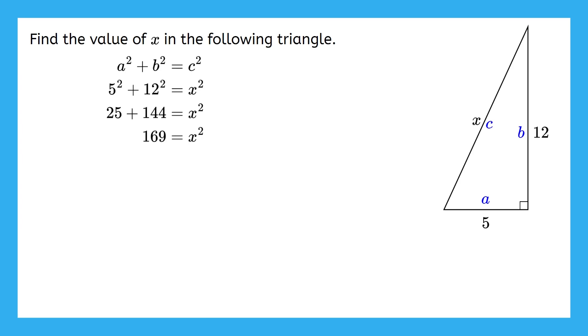Then, for the final step, we have to get x by itself, which means we have to get rid of the squared next to the x. To do this, we'll take the square root of both sides, since squared and square root cancel each other out, and this will give us x equals 13. And that's it! That's the length of the hypotenuse of this triangle.